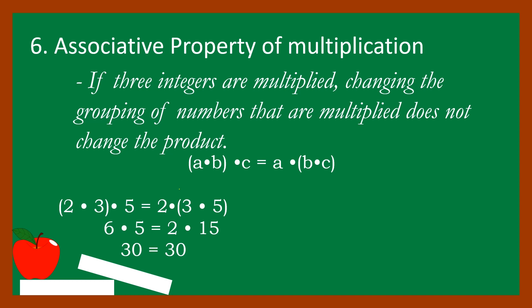Simplifying: two times three equals six, and six times five equals thirty. On the other side, three times five equals fifteen, and fifteen times two equals thirty. This means even with different groupings of the three integers, when we multiply, we still get the same result.